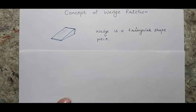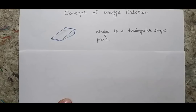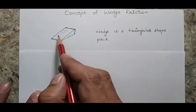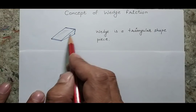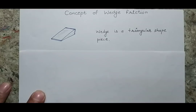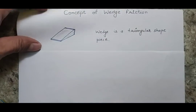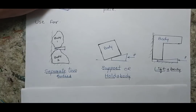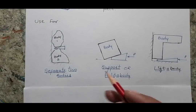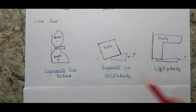Wedges are one of the important topics covered in friction. Wedges are basically triangular shaped pieces. These sorts of shapes are known as wedges. The apt application of a wedge in the context of friction can be defined as the separation of two different bodies, or to hold bodies, or to lift a body.